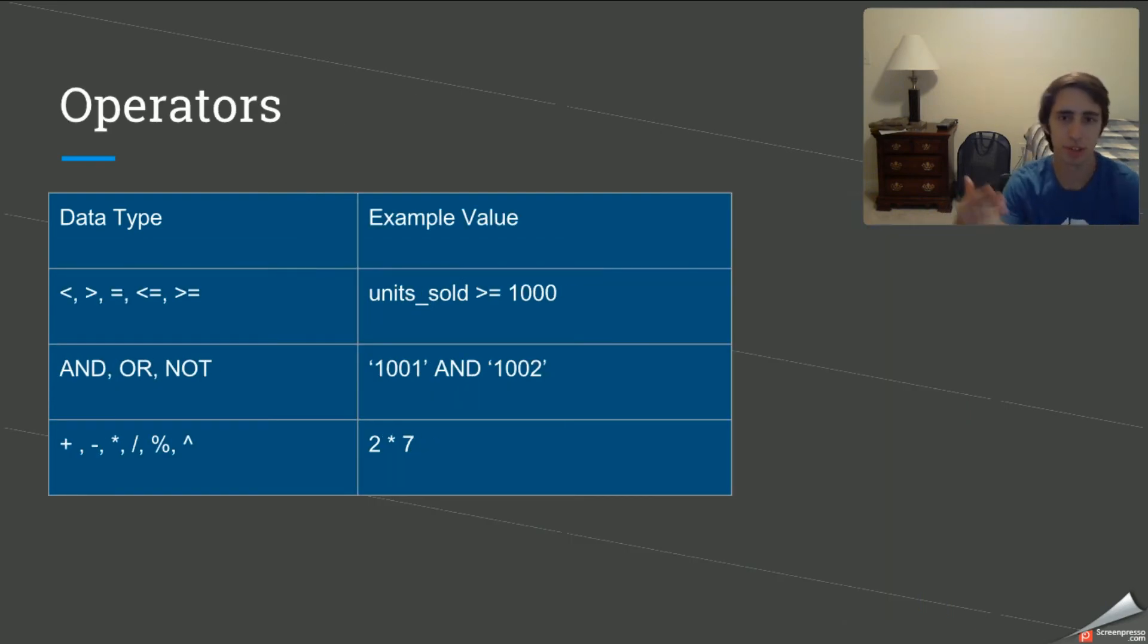Alright, so next up we're going to be talking about the operators. Now there's tons of operators, but these are what you're going to be using 90% of the time, especially at a beginner's level. And we use a lot of these. However, a lot of them that we didn't use are pretty self-explanatory. So we have the less than sign, the greater than sign, the equal to, the less than or equal to, and the greater than or equal to. And then the example, we use this a lot during our unit sold scenarios. So where we have the WHERE clause, and then we set the operator, and then we set our rules in.